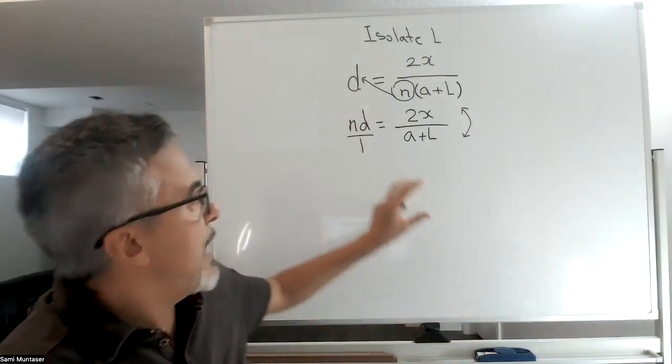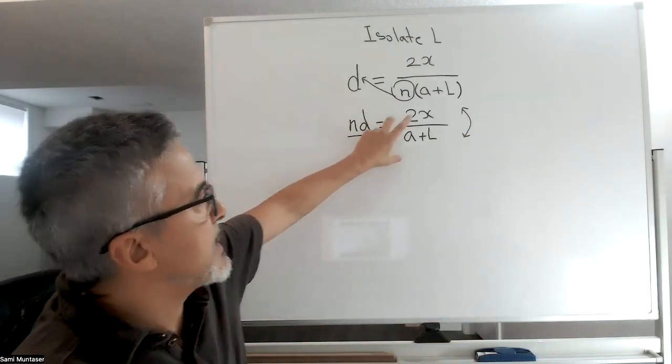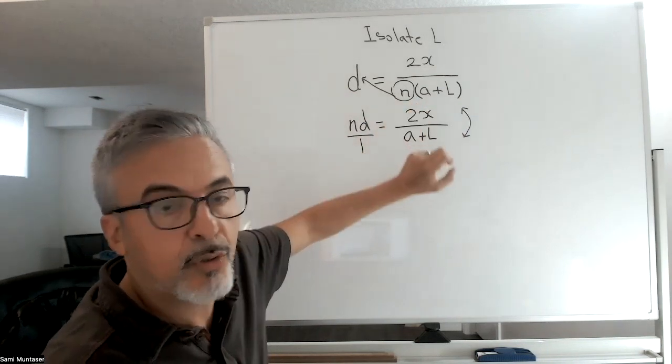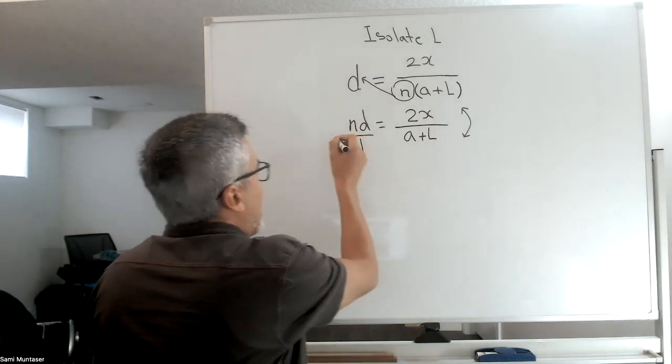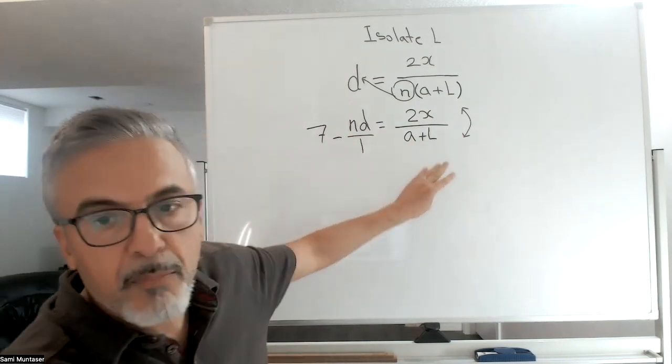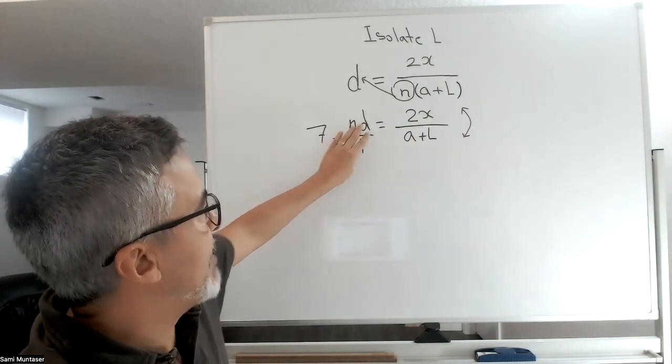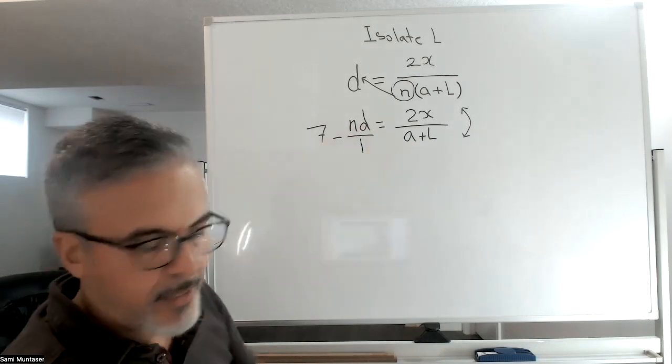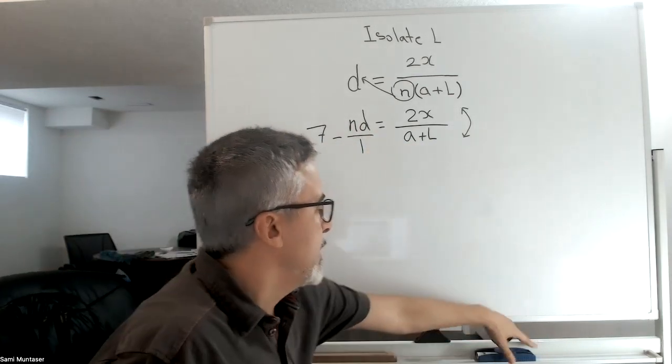When you have one fraction here and an equal sign and another fraction here, you could do that. But let's say if I put seven minus that here, then you will not be able to rotate anymore because that's not one fraction, that's a whole number minus a fraction.